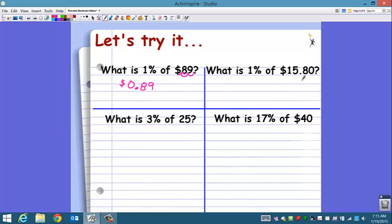1% of 15 dollars and 80 cents. Move it two places to the left. One, two, and you get .1580. We are talking about money. Since we are talking about money, it needs to be in a dollar cent format. And the cents go to the hundredths place. So we're going to have to round this.